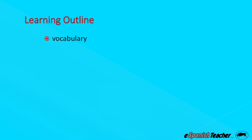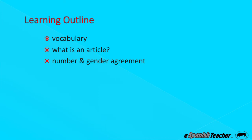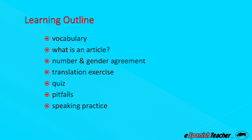Here's the learning outline. First, we're going to start with some vocabulary, followed by a quick overview of what an article is and how they're used. We're going to contrast English articles with those in Spanish, since the list grows with that added layer of complexity. Then we'll look at number and gender agreement, some translation exercises, a quiz, a look at common pitfalls, a speaking practice, and comprehension. Let's get started.